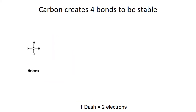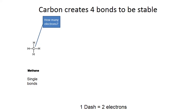Because carbon can bond up to four times, very complex molecules can be created. In methane, all the single dashes are called single bonds. Focusing on the carbon in the middle, there are four dashes — one dash equals two electrons, so four dashes equals eight electrons. Notice how that carbon in the middle is stable.